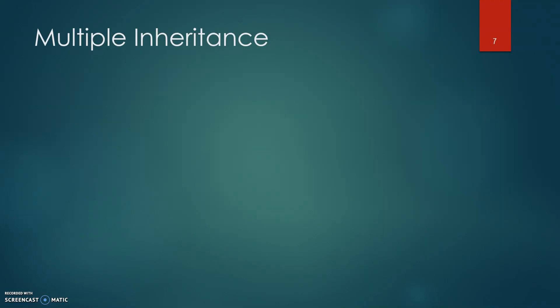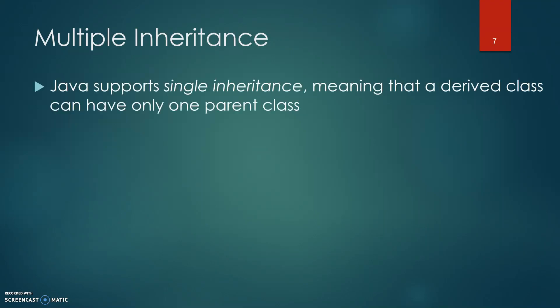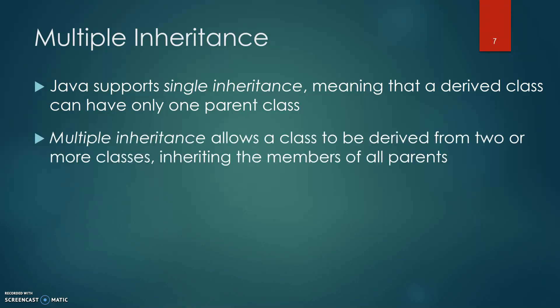Multiple inheritance. Java supports single inheritance, meaning that a derived class can only have one parent class. Multiple inheritance allows a class to be derived from two or more classes inheriting the members of all parents.